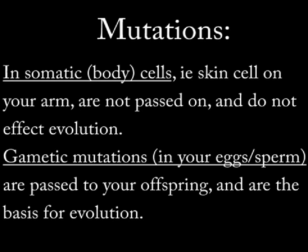For example, one of the skin cells on your arm can undergo a mutation. That will affect you, but it won't have any effect whatsoever on your offspring. However, it can also occur in some of your gametic cells, such as your egg or your sperm. If you have a mutation in a gamete and that egg or sperm goes on to produce a child, that mutation will be present in all of your children's body cells.